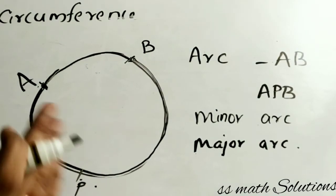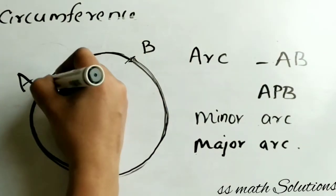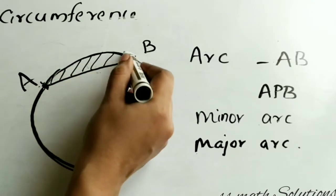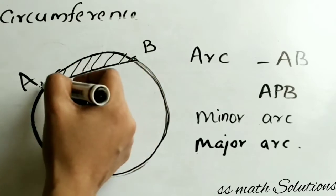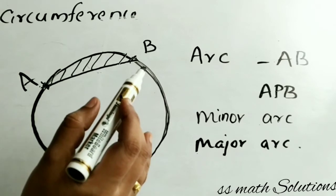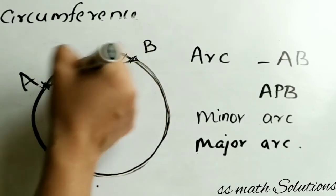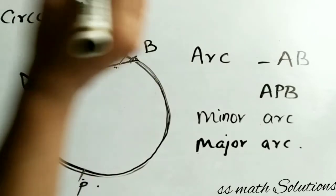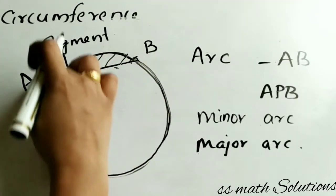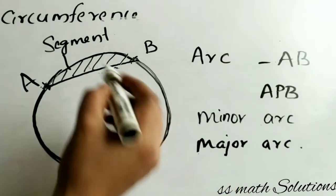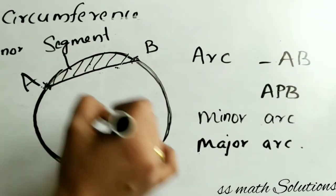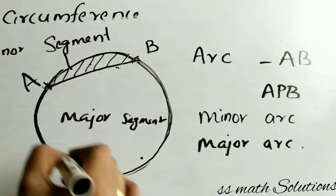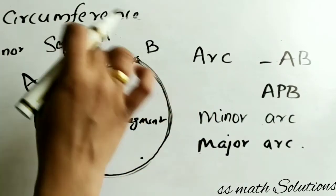Now drawing A-B as a chord. I am considering this part — one chord and one arc together. This is called a segment. One chord and one arc together is called a segment. And the same way as minor arc and major arc — the segment on the minor arc side is called the minor segment, and the segment on the big arc side is called the major segment. Major segment means this big part — big arc and one chord. This is the major segment and this is the minor segment.